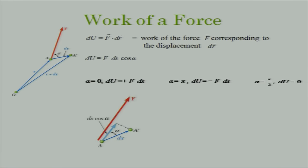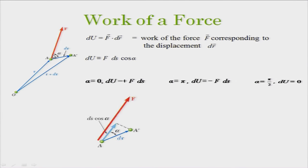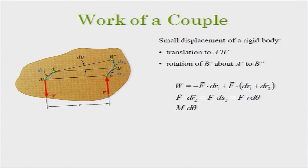Special cases: when α = 0, work is simply F·ds. When α = π, the force and displacement are exactly opposite, so work is negative. When displacement is perpendicular to the force, work done is zero. Now, one step ahead — suppose we have a couple acting on a rigid body with forces F and -F. We want to find the work done by the couple.